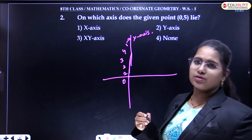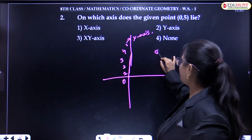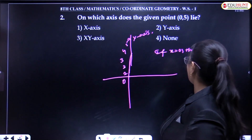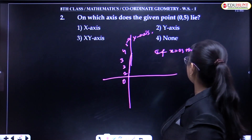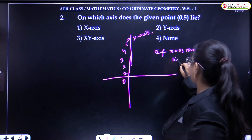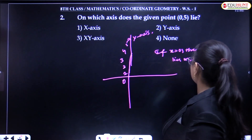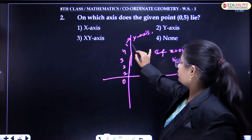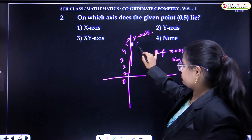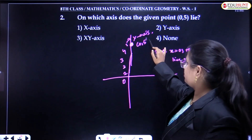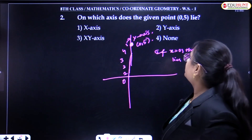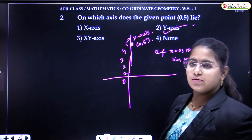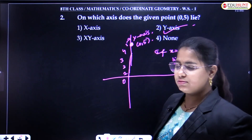If the X coordinate is equal to 0, that means the point lies on the Y axis. So the point (0, 5) lies on the Y axis.